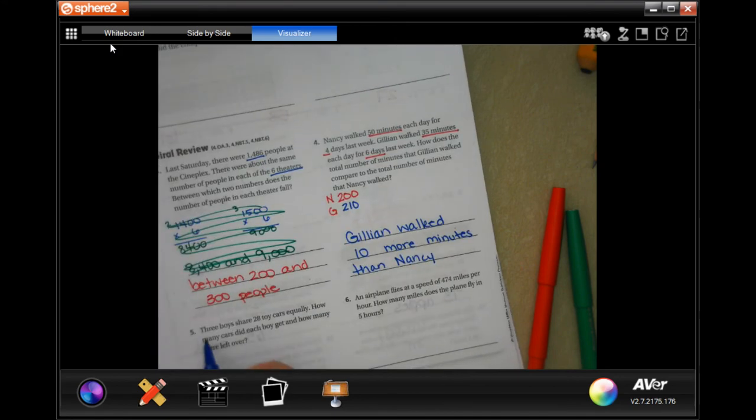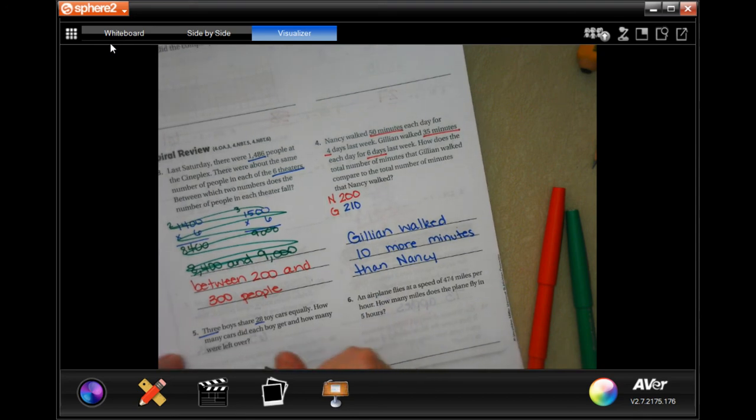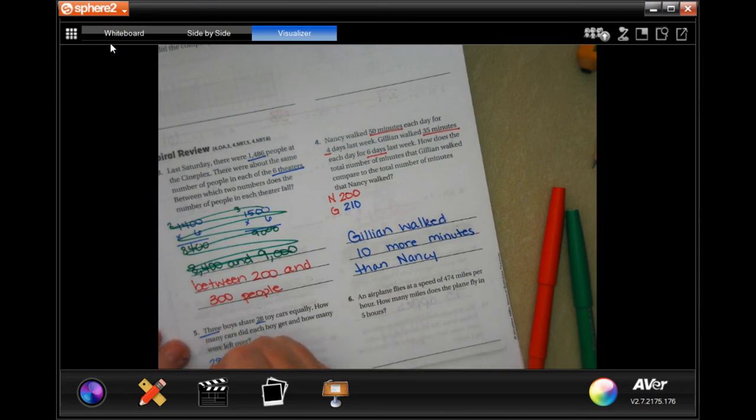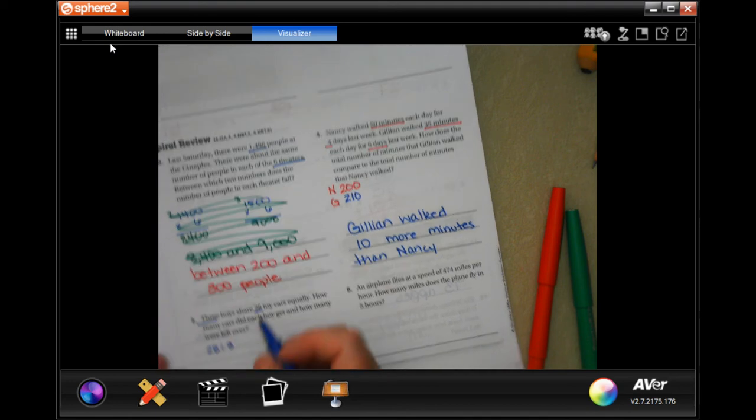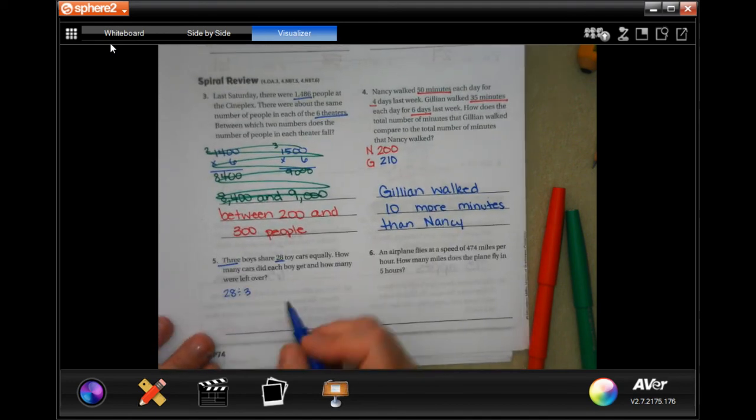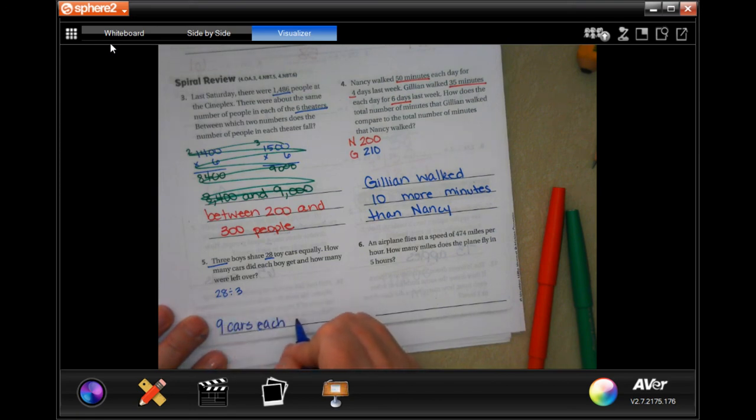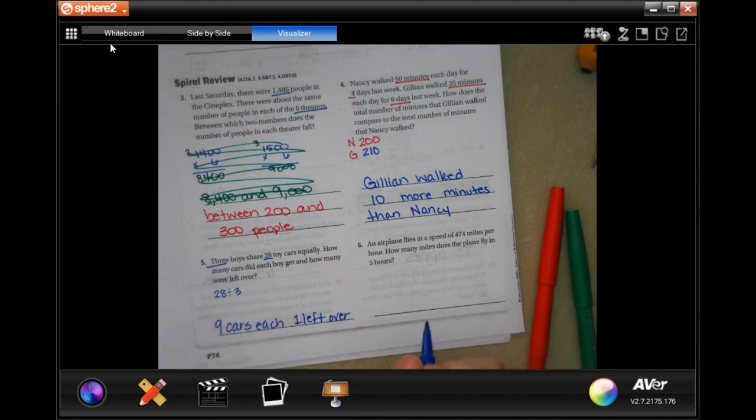3 boys share 28 toy cards equally. How many cards did each boy get, and how many were left over? So, if I did 28 divided by 3, the closest I can get, sorry, you guys can't see that, is 3 times 9 is 27. So, 9 cards each, and 28 minus that 27 would be 1 left over.